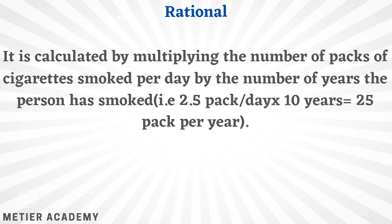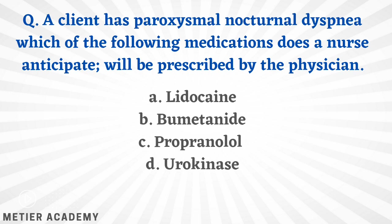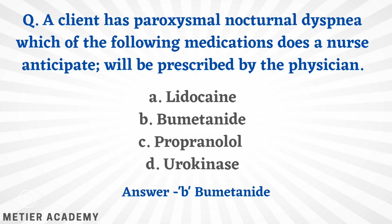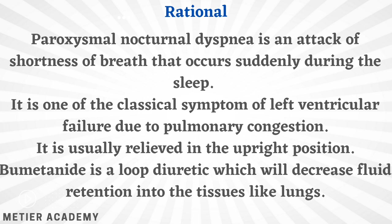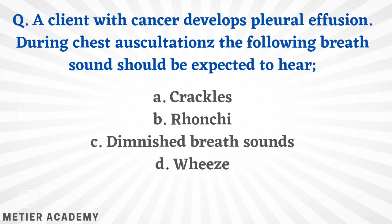Next: a client has paroxysmal nocturnal dyspnea — which medication does the nurse anticipate? Options include lidocaine, bumetanide, propranolol, and urokinase. The correct answer is option B, bumetanide. Paroxysmal nocturnal dyspnea is a sudden attack of shortness of breath occurring during the night — a classic symptom of left ventricular failure. When there is left ventricular failure, pulmonary congestion occurs, relieved by upright position. Bumetanide is a loop diuretic that decreases fluid retention in tissues like the lungs.